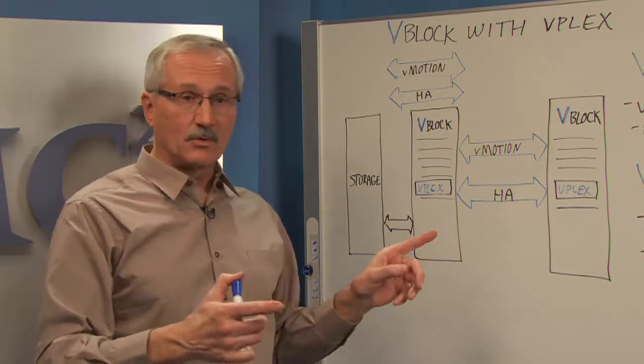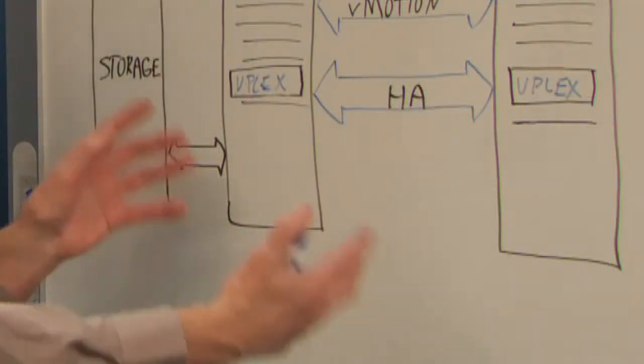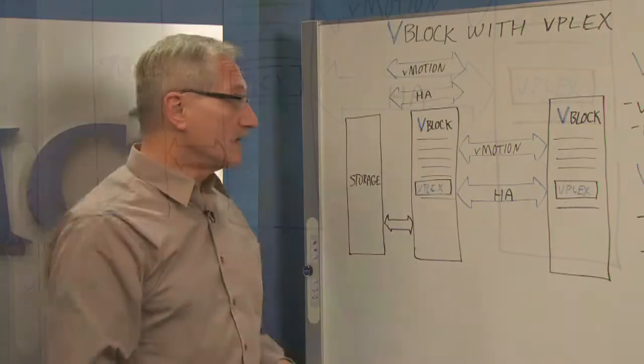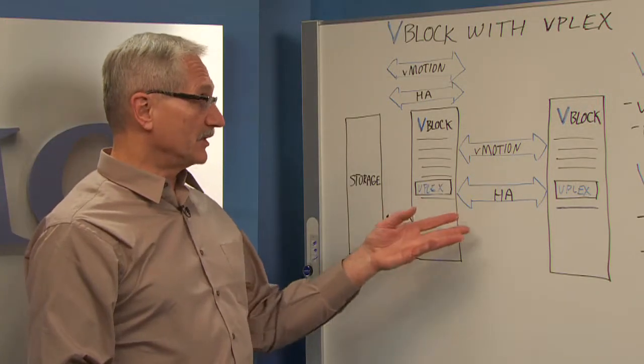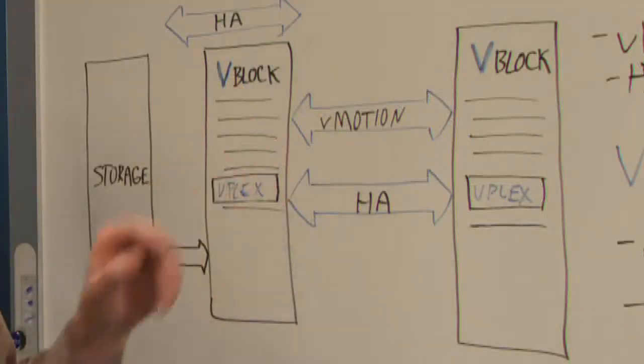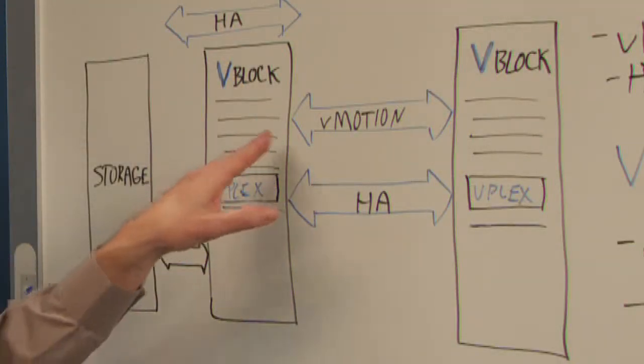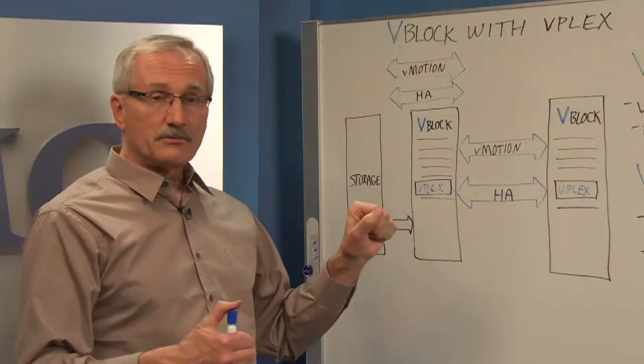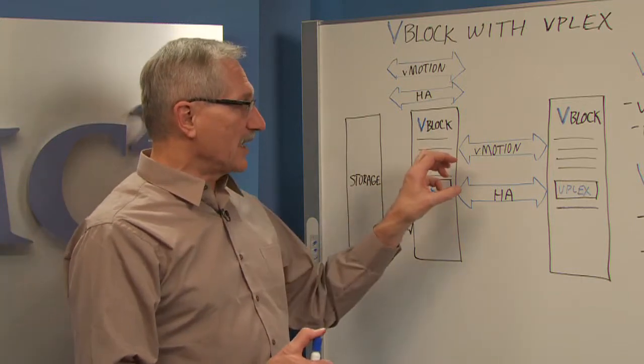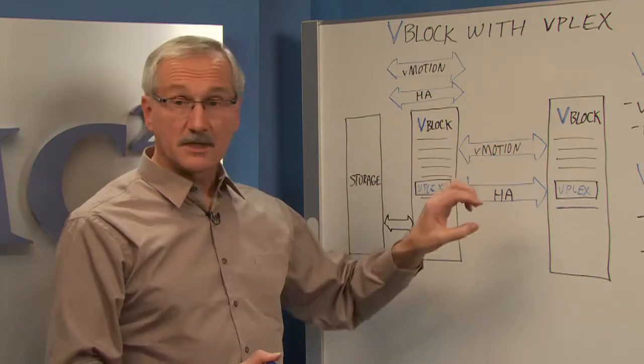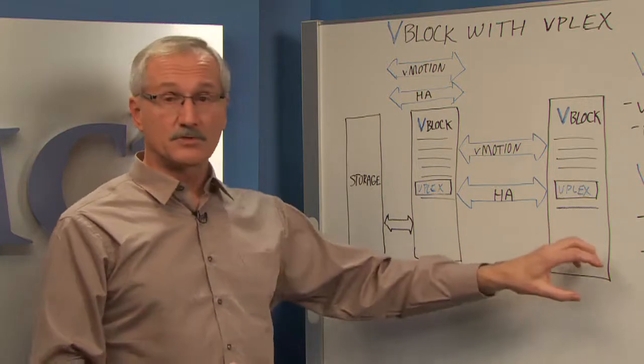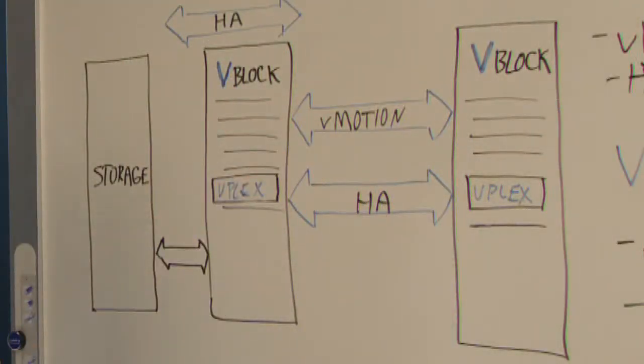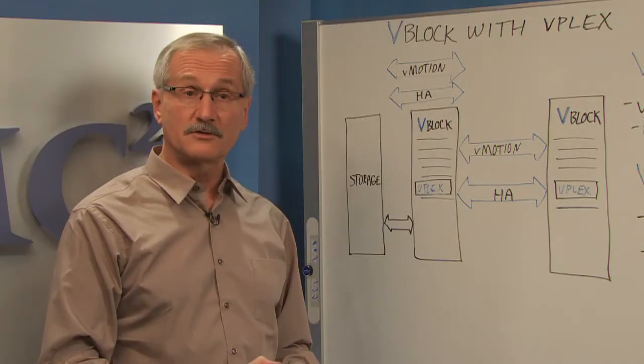This does a couple of things. One is it ensures your data is in two places. So if something happens here, your data is there. But it also lets you extend the capability of vMotion and HA. So if we start with vMotion, vMotion across distance is very, very rapid because the data that any of those virtual machines need to run on the other site is already there. vPlex has assured that. So when you move them across, they start running almost instantly, near zero RTO.